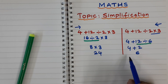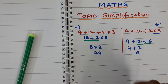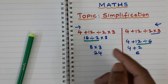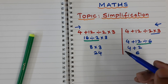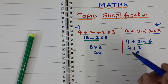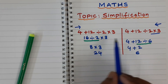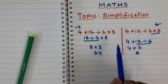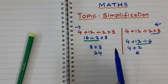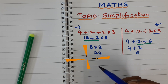So in mathematics we cannot have two different answers for the same expression — we should have only one unique answer. Then how can we fix this problem? To solve this type of statements or expressions we have to follow a unique rule.